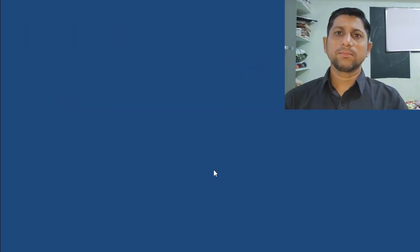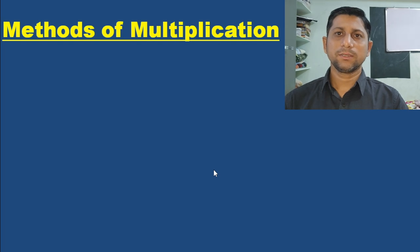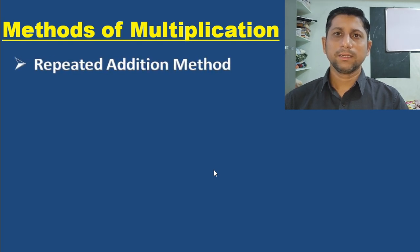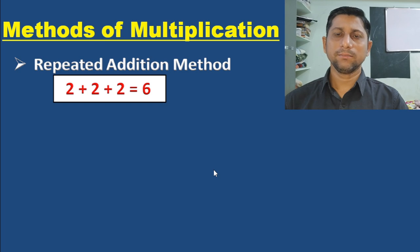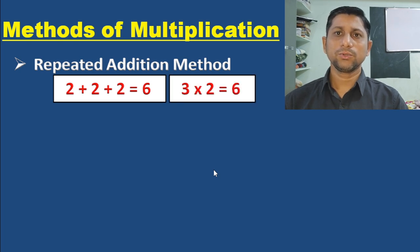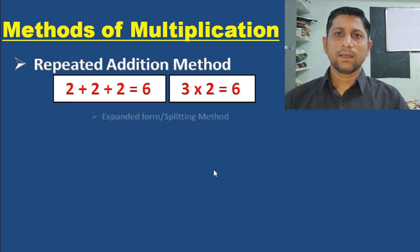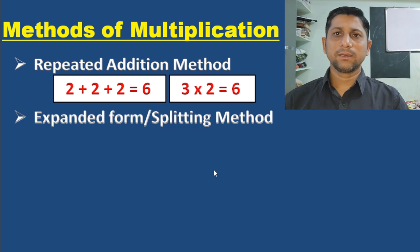Now I am going to talk about some multiplication methods. Method number one: the repeated addition method. A number is added repeatedly — for example, two is added three times: 2+2+2 equals 6. This can also be written in the form of multiplication as 3×2=6. This method is very useful for pre-primary level and grade one students to explain multiplication of single-digit numbers. The second method is the splitting method, or expanded form.